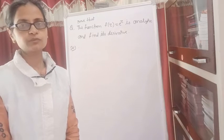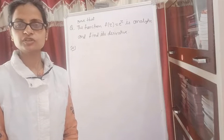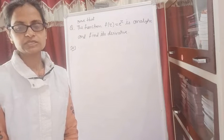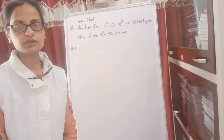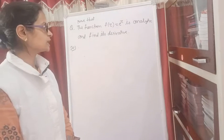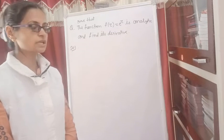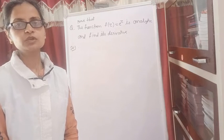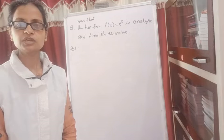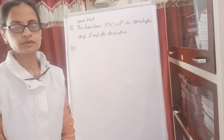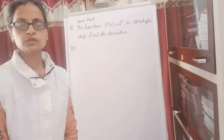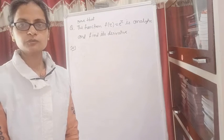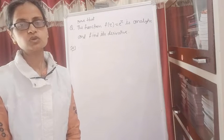If it is analytic, it will be differentiable. When it is differentiable, its derivative will exist, and we will find out the derivative here. For this, we will satisfy the Cauchy-Riemann equations. For which, we need u and v. We will get the given function and write it in the form of x and y, so that we can get the real and imaginary parts and separate the functions u and v.